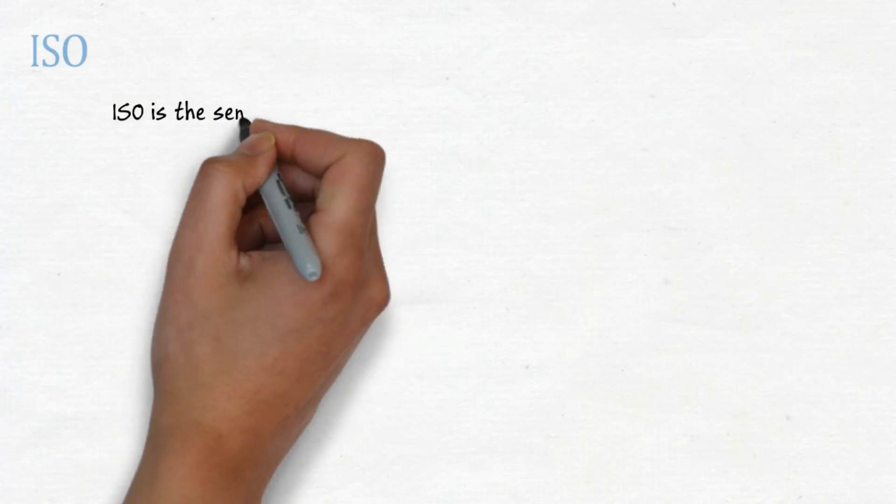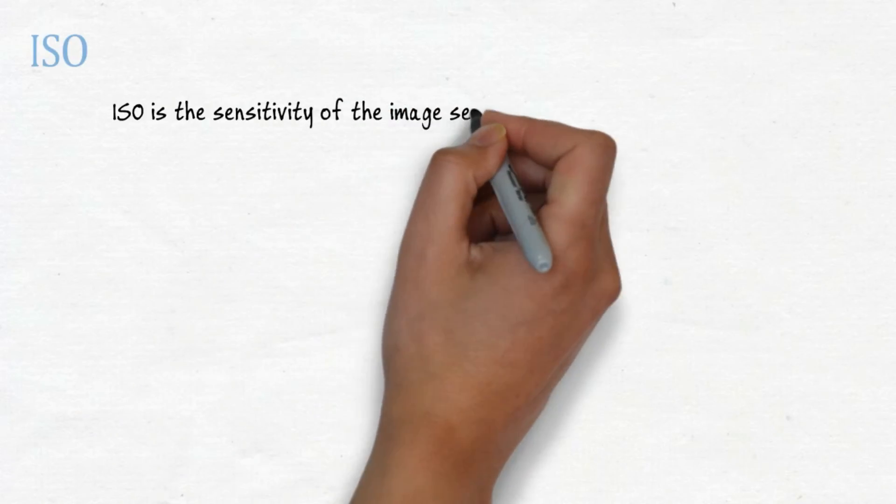ISO is the sensitivity of the image sensor found in your camera.